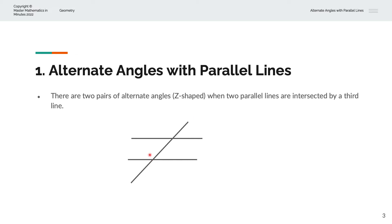We can label this angle as A. The alternate angle of A is here, and we can label that as B. It forms a Z-shape: a horizontal line, a vertical line, and then the horizontal line again, making up the Z-shape.